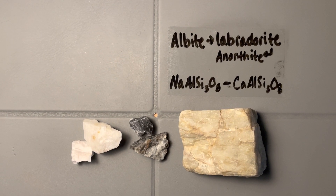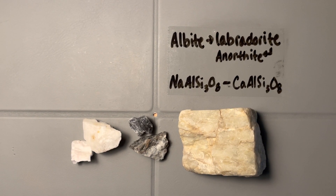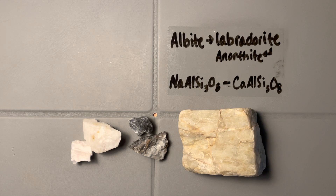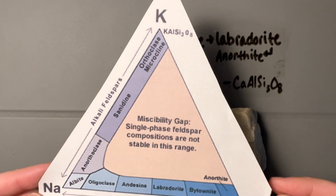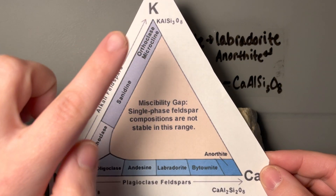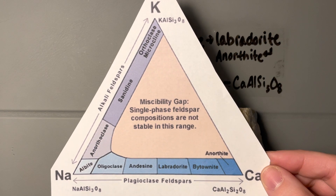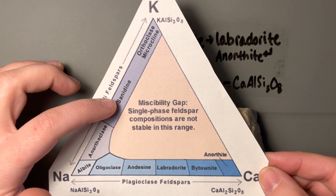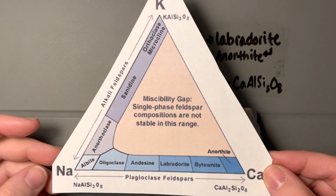This is our second feldspar video. We're going to talk about the solid solution from albite to labradorite to anorthite — the sodium end member to the calcium end member. Looking back at our diagram, when we covered orthoclase and microcline we were up here. We're going to skip sanidine even though it's on your mineral list.